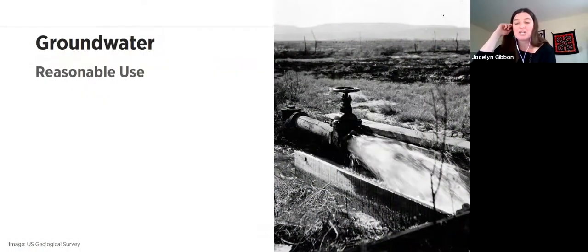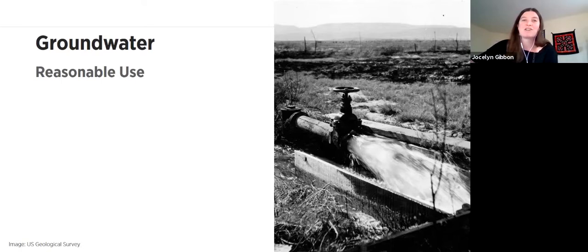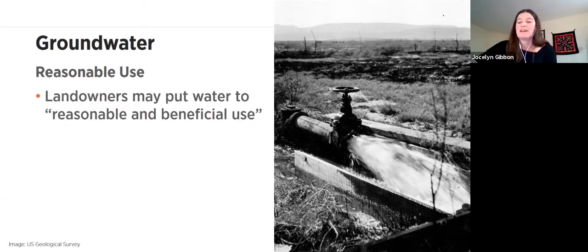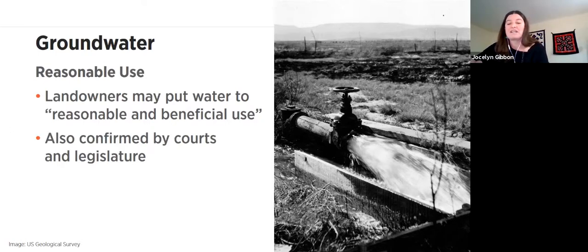Thinking back to the time of European expansion and settlement in the Southwest, groundwater was at first more difficult to access than surface water. People used hand-dug wells powered by humans, then by burros or other animals, then by steam engines — all before there was widespread electricity to pump water from the ground. From the beginning, groundwater was treated as separate from surface water, and if the custom around surface water was first come, first served, the custom around groundwater was essentially help yourself — if you could sink a well and pump from it, you did. This help-yourself custom was confirmed by territorial and state courts and evolved into what is referred to as the reasonable use doctrine.